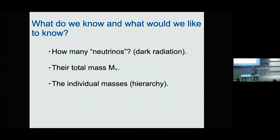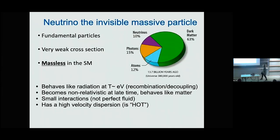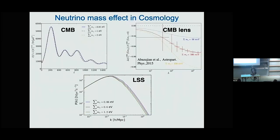We are also interested in looking at deviations from the standard model, for example to understand neutrino properties. In cosmology we want to know how many neutrinos exist in our universe, what their total mass is, and ideally the individual masses. Neutrinos are the only known particles that behave as radiation at early times and as non-relativistic matter at late times. They have very weak cross-sections and high velocity dispersion, making them the only known candidate for hot dark matter. They affect the matter power spectrum by suppressing it at small scales.